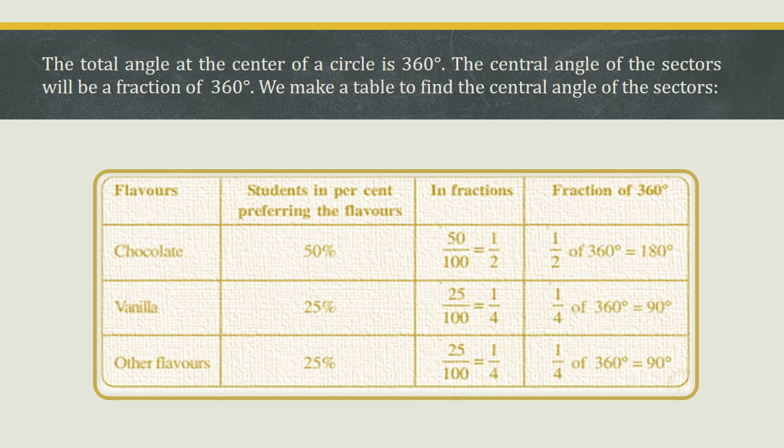We convert the percentages to fractions: chocolate is 50/100, which simplifies to 1/2; vanilla is 25/100, which simplifies to 1/4; and other flavors are also 1/4. Now we calculate the central angles: 1/2 × 360° = 180° for chocolate; 1/4 × 360° = 90° for vanilla.